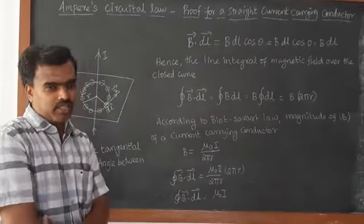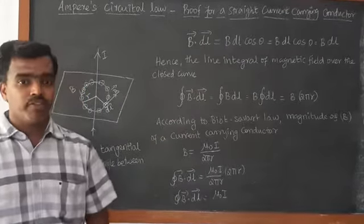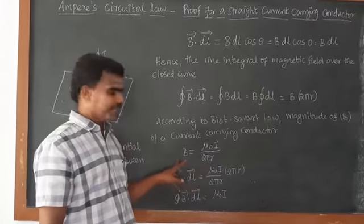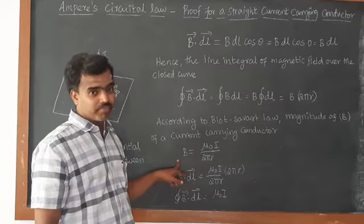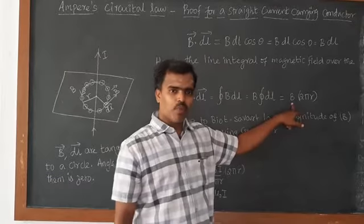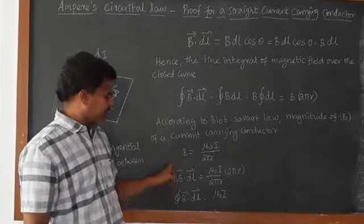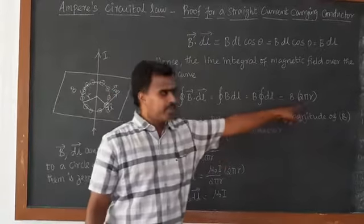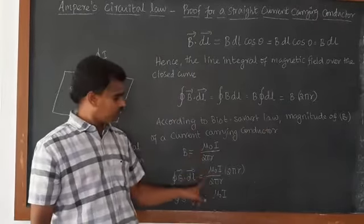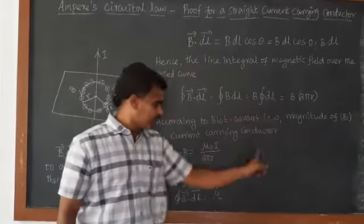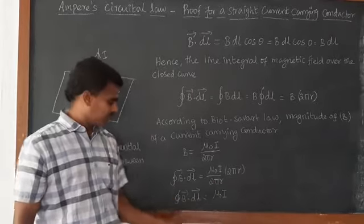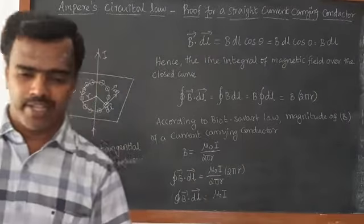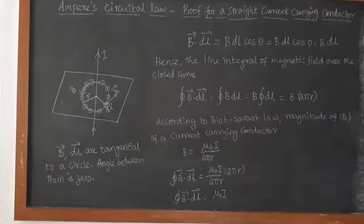From our previous result, the magnetic field B of a current-carrying conductor is B = mu-0 I divided by 2πR. Substituting this B value: the line integral of B-vector dot dL-vector equals B times 2πR, which equals (mu-0 I / 2πR) times 2πR. The 2πR terms cancel, giving us the line integral of B-vector dot dL-vector equals mu-0 I. This is the statement of Ampere's Circuital Law.